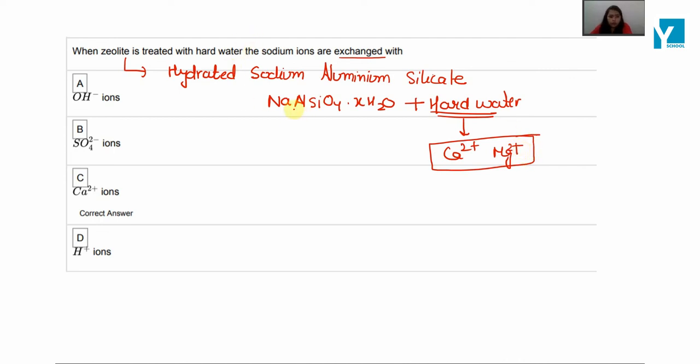So when zeolite is treated with hard water, then the sodium ions are exchanged. If we take example, Na2Al2Si2O8·xH2O, which is nothing but our zeolite.